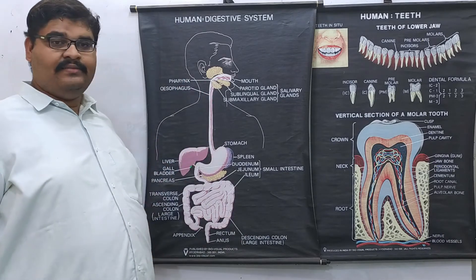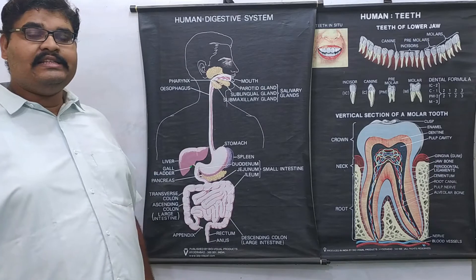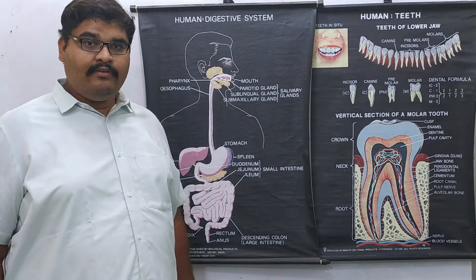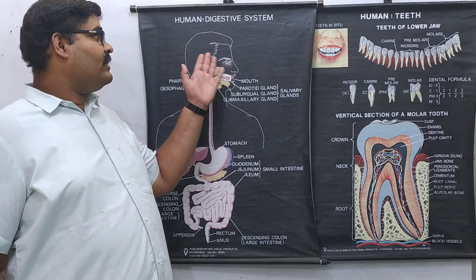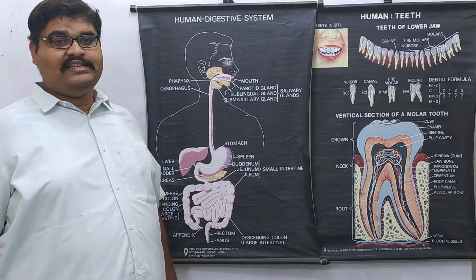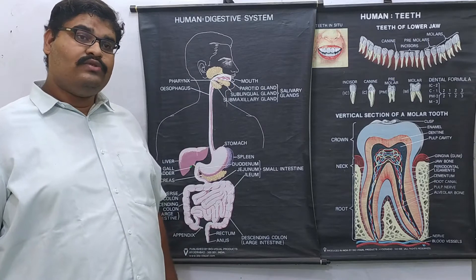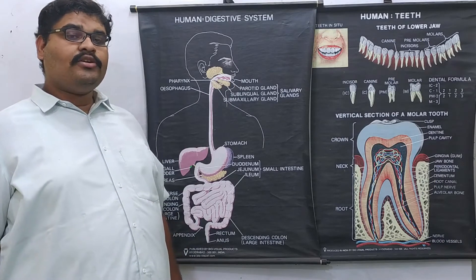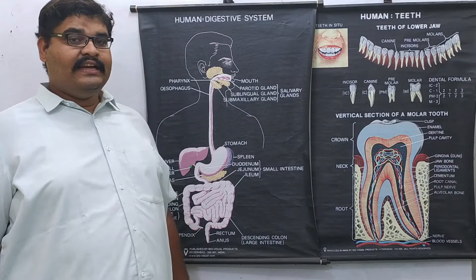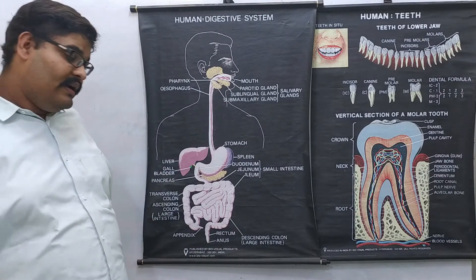Digestion can be defined as the process of breakdown of complex food materials into simpler ones — the process of converting insoluble forms of food into soluble forms. There are two main types of digestion we will focus on: mechanical digestion and chemical digestion.